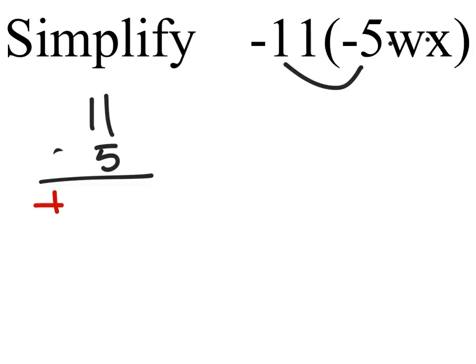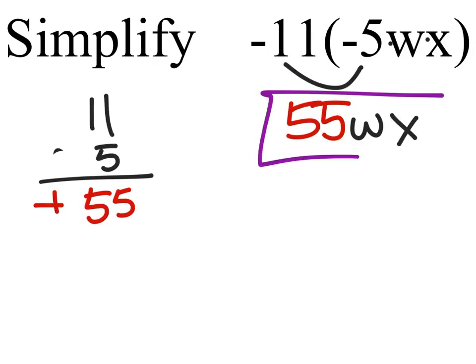We just need to do 11 times 5. Well, 5 times 1 is 5, and then 5 times the other one is 5 as well. So the answer to negative 11 times negative 5 is 55, and that would still be multiplied by W and X. And there's our final answer.